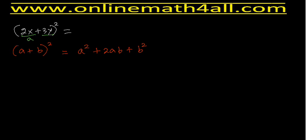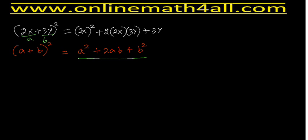So instead of a we have 2x, and instead of b we have 3y in the given expression. Now we write the result on the right side, but substituting: instead of a we apply 2x, instead of b we apply 3y. So instead of a², we write (2x)²; then + 2 times 2x times 3y; and instead of b², we write (3y)² — because we have b² in the identity and b = 3y.